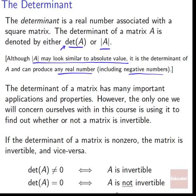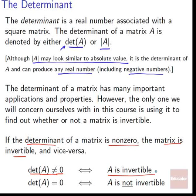The determinant has many important applications and properties, but in this course we're only going to concern ourselves with one: whether or not the matrix is invertible. If the determinant of A is non-zero, then the matrix is invertible, and vice versa. If det(A) ≠ 0, then A is invertible. If det(A) = 0, then A is not invertible. This works a lot like we're used to with real numbers — you can invert any number except 0. Similarly, you can invert any matrix except those with determinant 0.